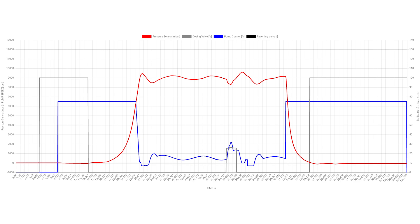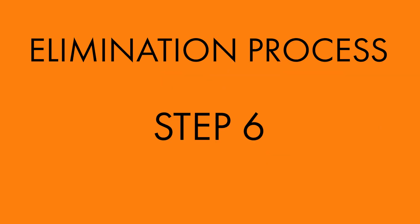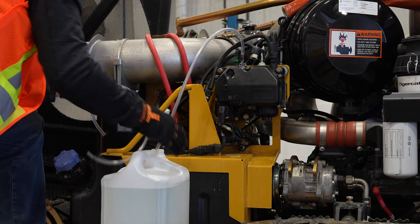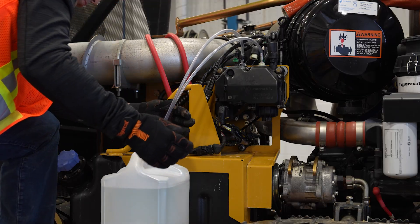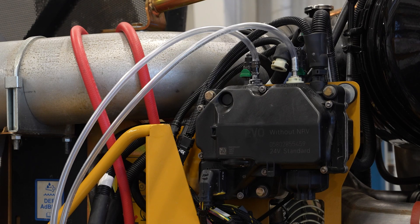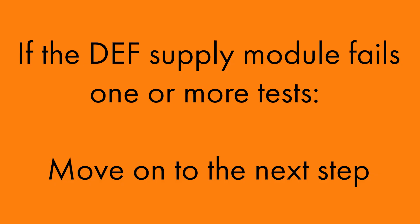If the module passes all three tests, then we have identified the DEF supply module as the cause for the fault. For the purpose of this video, we will show what happens when all components have been ruled out. Step 6: Connect the appropriate size clear tubing to the inlet and backflow fittings on the supply module and place the other ends into a container filled with new DEF. Place the DEF container next to the DEF tank or at a similar height and distance from the DEF supply module as the DEF tank to approximate operating conditions. Perform three consecutive UDST tests while monitoring the fluid in the tubing — make sure that there is no air in the tubing during the tests. Save the results from each test. If the DEF supply module fails one or more tests, move on to the next step.